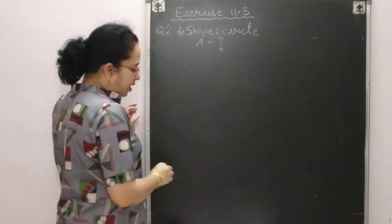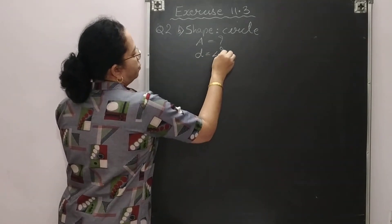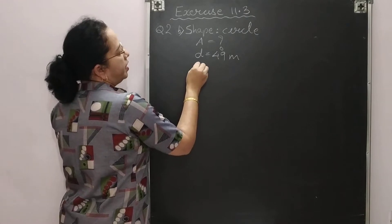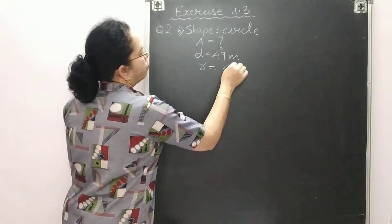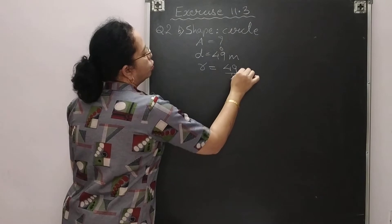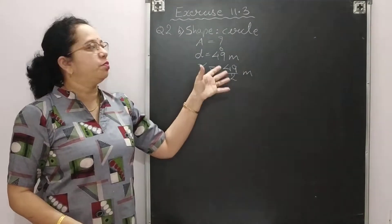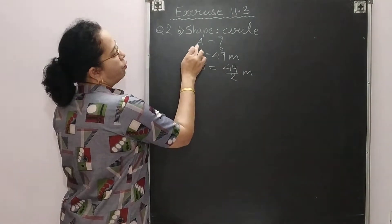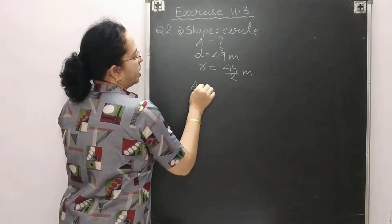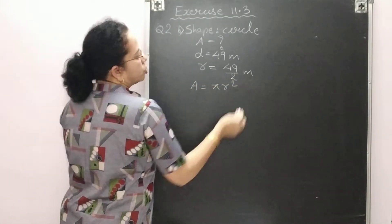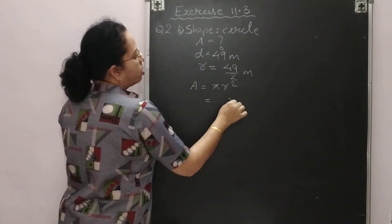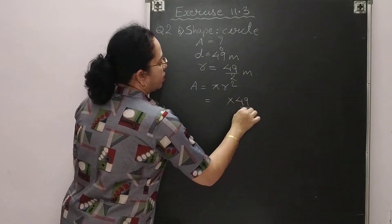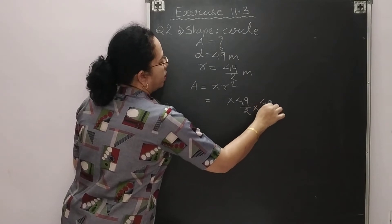The diameter is 49 meter. We require the radius, so r = 49/2 meter. Don't cut the numbers yet, as cancellations may happen in the next step. The formula for area of a circle is πr², so write π × (49/2) × (49/2).